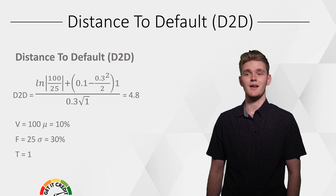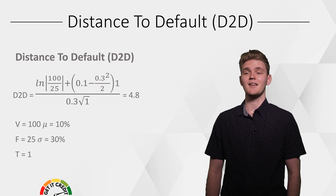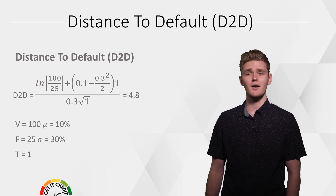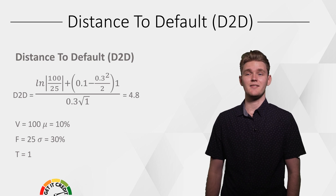Using a simple example: value of the firm's assets equals 100, face value of the debt equals 25, expected return on firm's assets equals 10% (0.1), standard deviation of asset returns equals 30% (0.3), and time to maturity of the firm's debt equals 1.